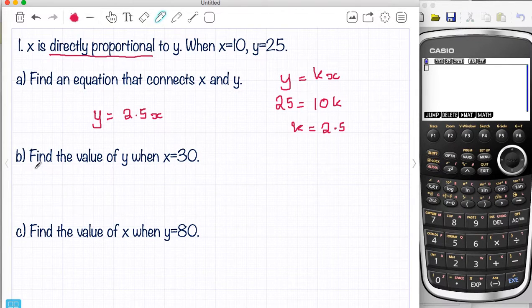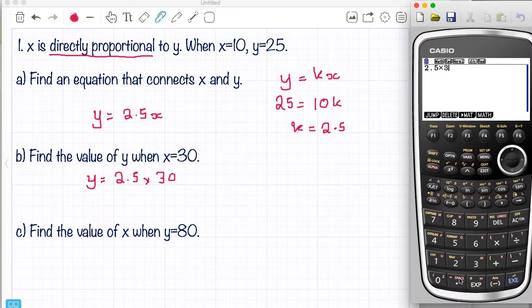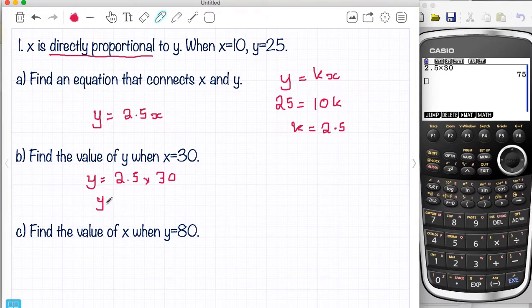So now we can do these. Find the value of Y when X equals 30. So this is Y equals K, which I know is now 2.5, times 30. Now I'm just going to play safe and do this on my calculator. 2.5 times 30, which gives me 75. So Y is 75.